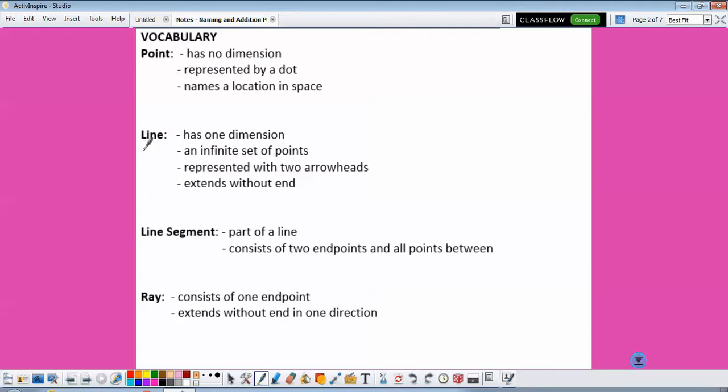So some vocabulary: a point has no dimension, it's represented by a dot, and names a location in space. So let's say we have this, that would be point P if we label it with a P.